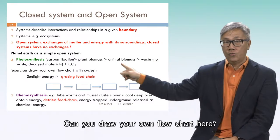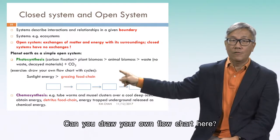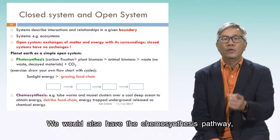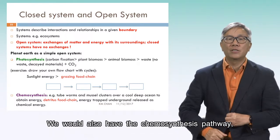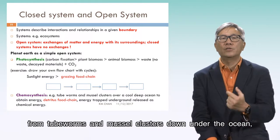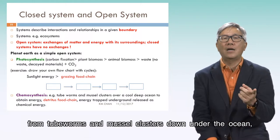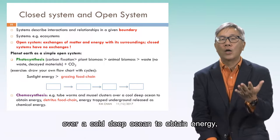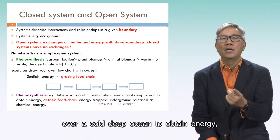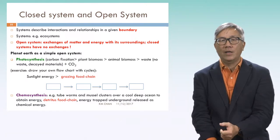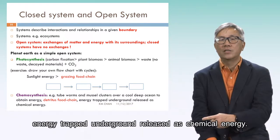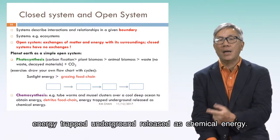Can you draw your own full chart here? We would also have the chemosynthesis pathway from tube worms and mussel clusters deep under the ocean, over a cold, deep ocean, to obtain energy in a detritus food chain — energy trapped underground and released as chemical energy.